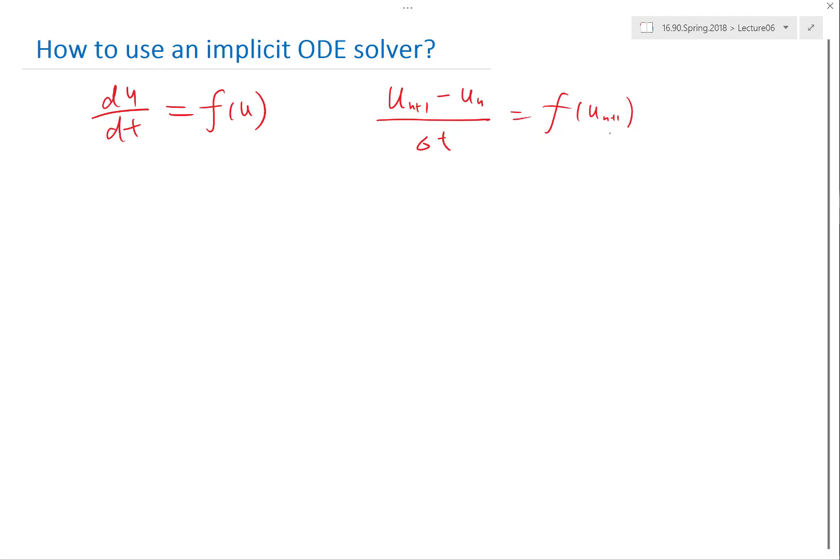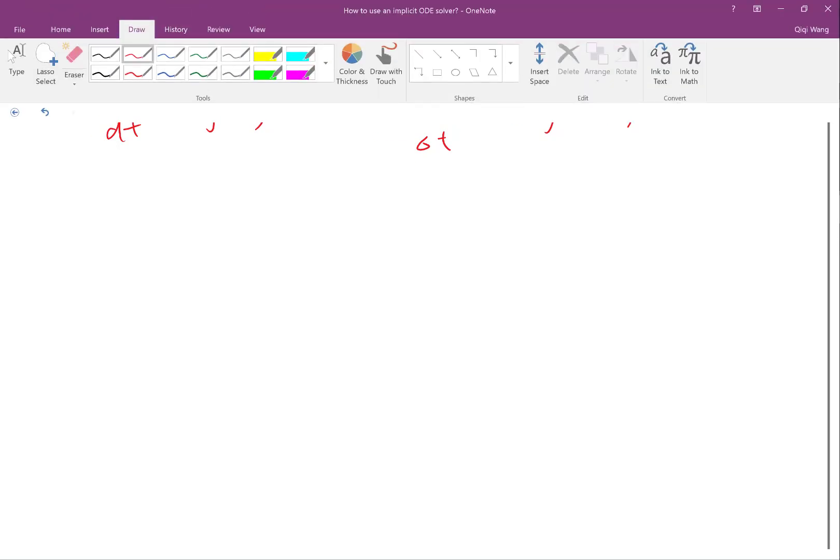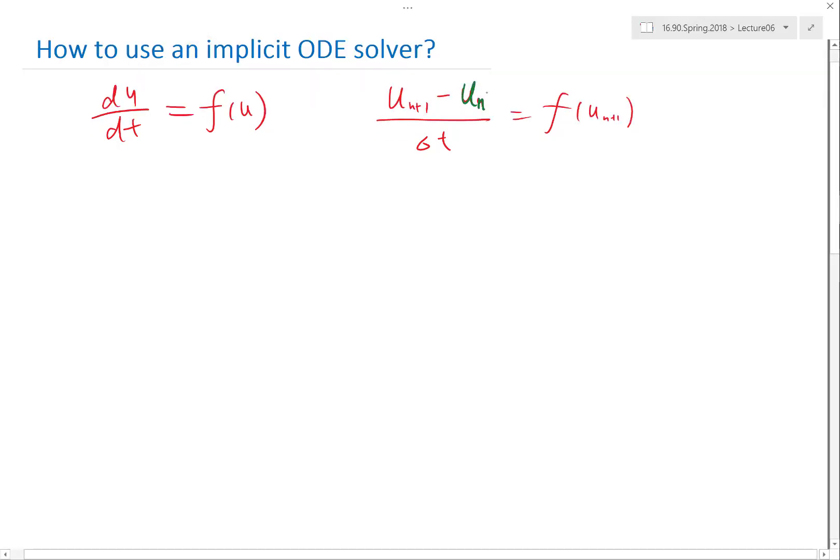So what I have is, let me rewrite this in a way that I want to use green to represent all the terms we know, and red represent all the terms we don't know. We find out we have more than one terms that we don't know: u_n+1 and f(u_n+1). They are related, but I can't just use this equation in a straightforward way to compute u_n+1. So how do I use this for a nonlinear equation?